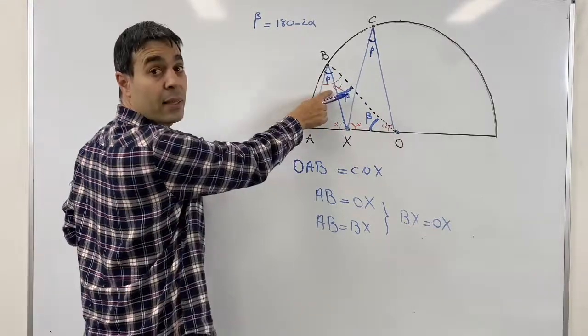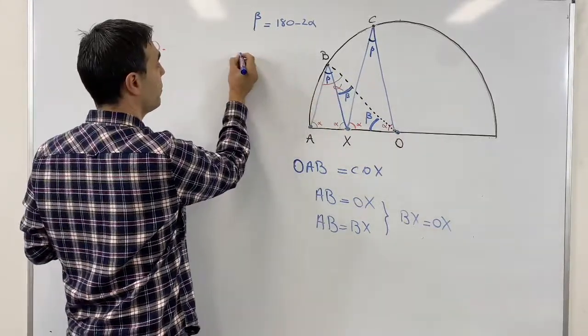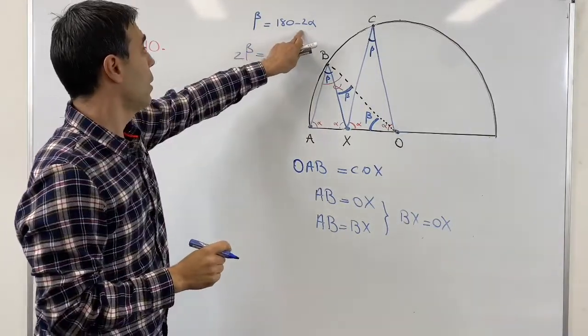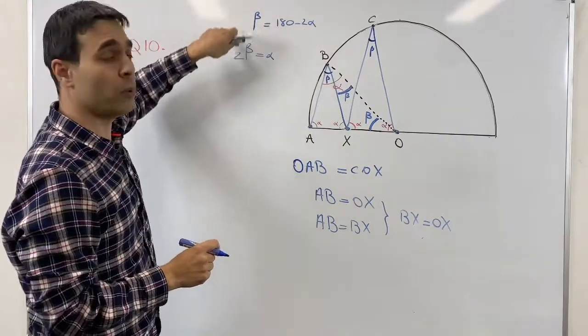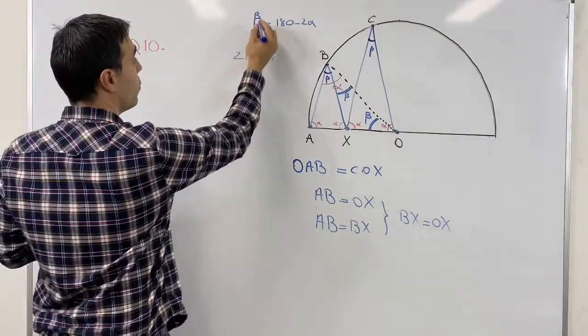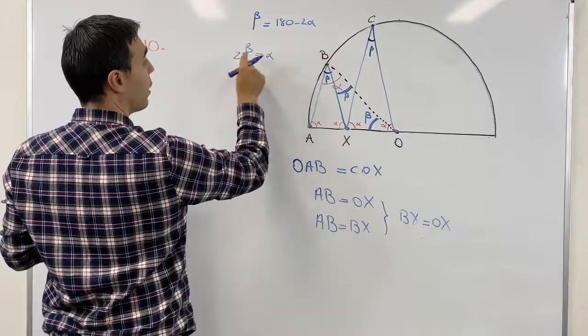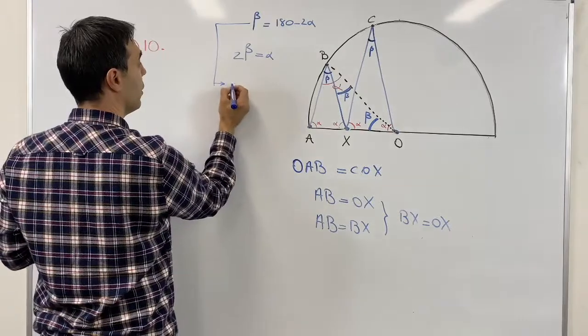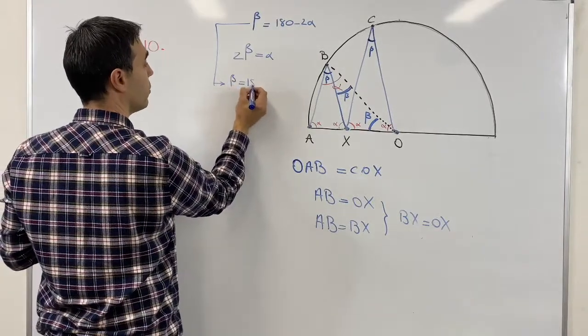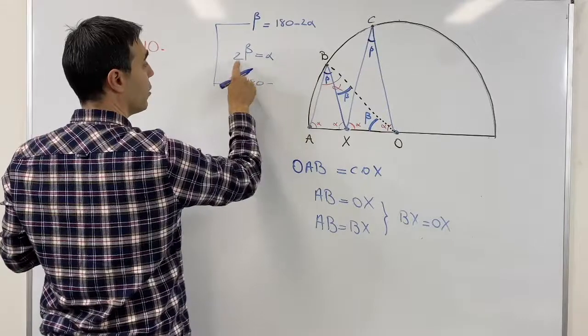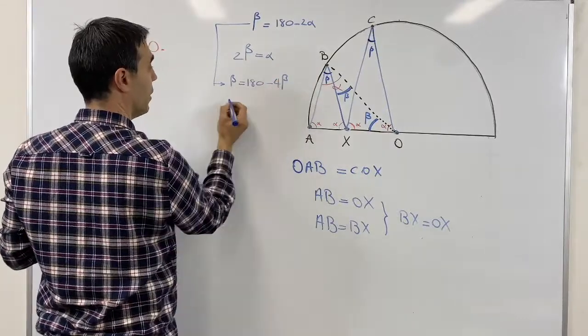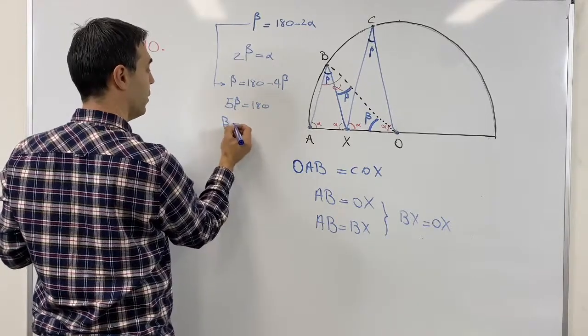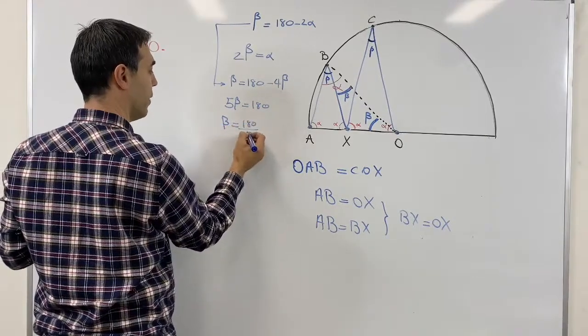So I write it 2 beta is alpha, and we knew that beta is 180 minus 2 alpha. We're going to just substitute them. So what we know is instead of alpha I'll have 2 beta, so this equation I write it beta is 180 minus 2 alpha, which is going to be 4 beta. And I know 4 beta is going to be 180, and beta is going to be 180 divided by 5.